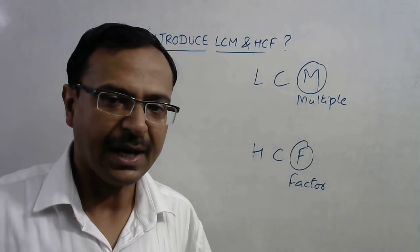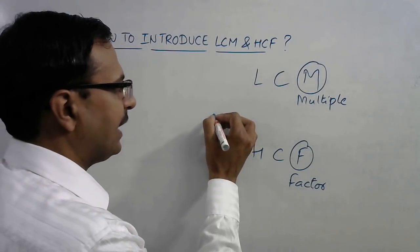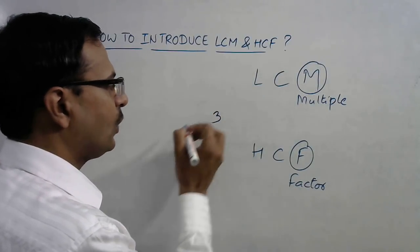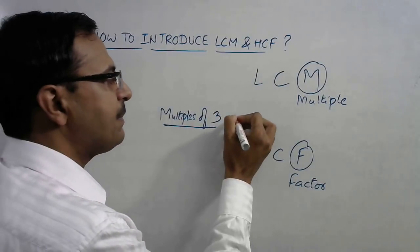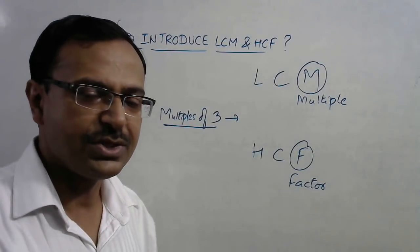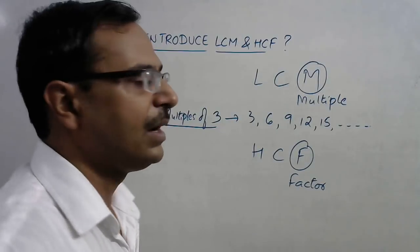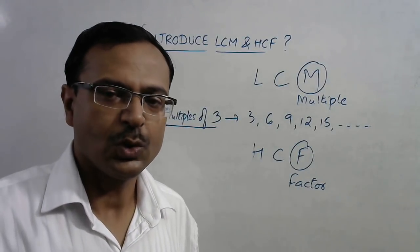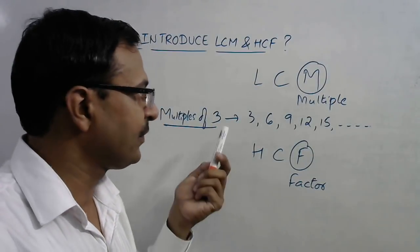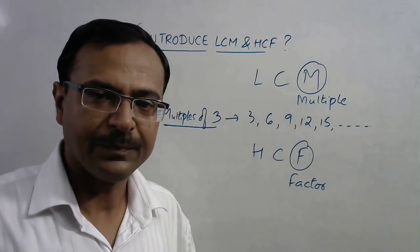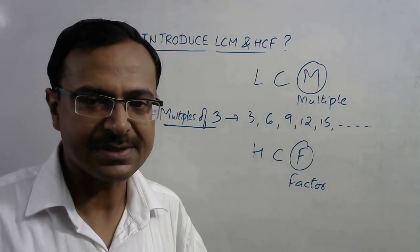To introduce the concept of multiples, take a number like 3 and ask students to write the multiples of 3. Multiples of 3 are the numbers which occur in the table of 3 — so 3, 6, 9, 12, 15, and so on. Students already know the tables, so ask them the multiples of several particular numbers. After practicing with 5 or 6 such numbers, they will understand what multiples are.